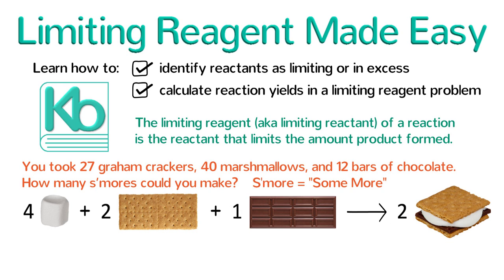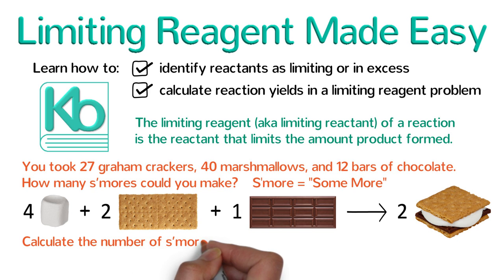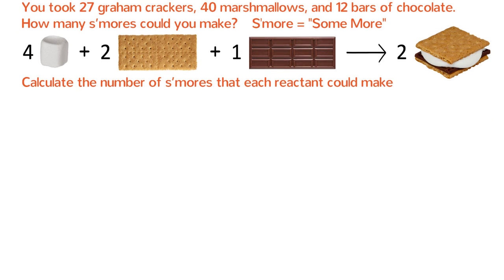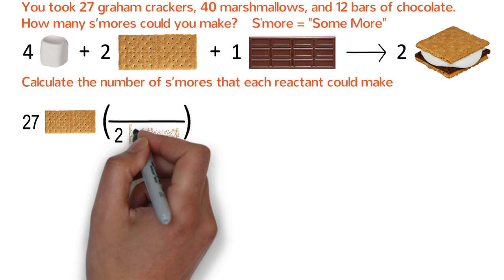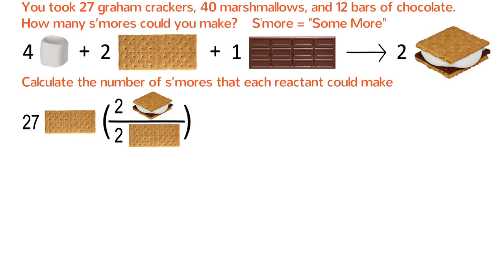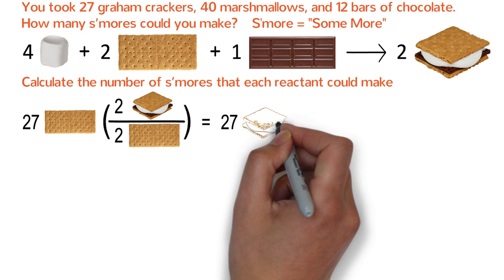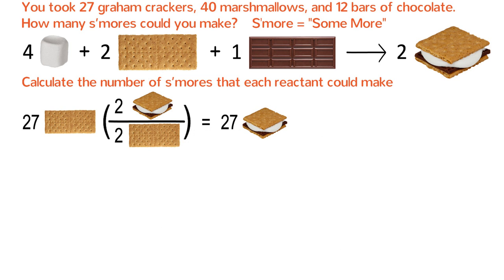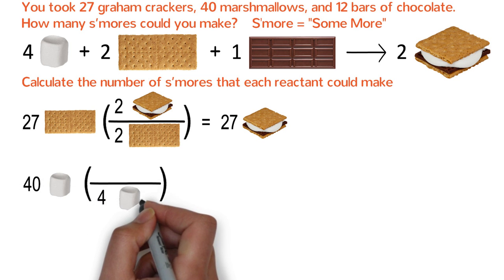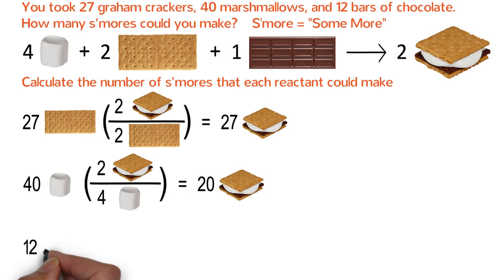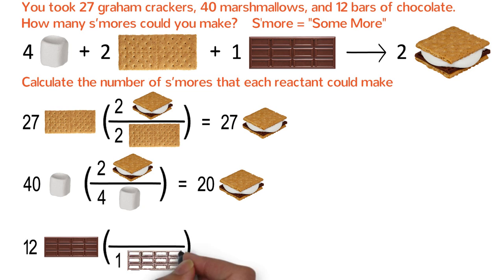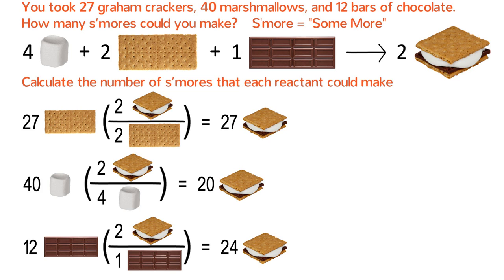To solve this problem, we need to calculate the number of s'mores that each reactant could make. Starting with graham crackers: you have 27 graham crackers, and two graham crackers make two s'mores, so you could make up to 27 s'mores. You have 40 marshmallows, and four marshmallows make two s'mores, so you can make up to 20 s'mores. You have 12 bars of chocolate, and one bar makes two s'mores, so you can make up to 24 s'mores.